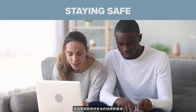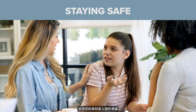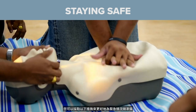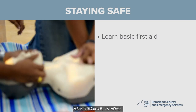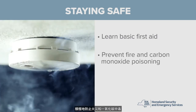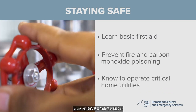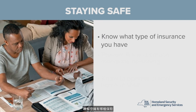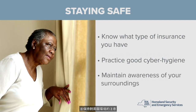Once you have your plan established, the next step is to prepare your home and your family by learning about techniques and resources to stay safe. You can take steps now to better prepare for an emergency by learning about basic first aid, having a first aid kit and emergency supplies for every member of your family including pets, acting to prevent fire and carbon monoxide poisoning, knowing how to operate critical home utilities, knowing what type of insurance you have, practicing good cyber hygiene, and maintaining awareness of your surroundings.